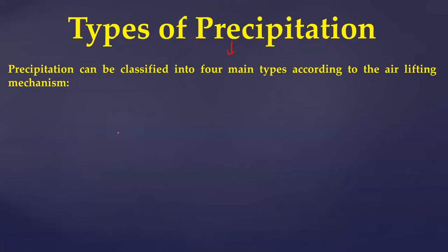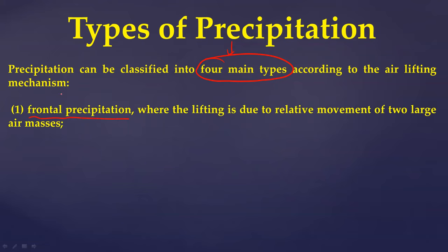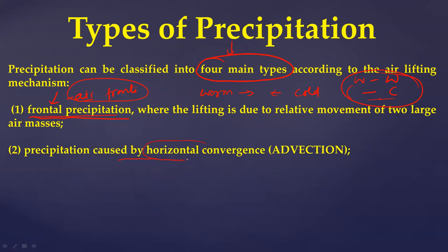Precipitation can be classified into four main types. First, frontal precipitation involves air fronts — where warm and cold air masses meet, different combinations produce different types of rainfall. Second, advection precipitation is caused by horizontal convergence of air; unlike frontal precipitation which involves large air masses, this can happen locally in a smaller area.